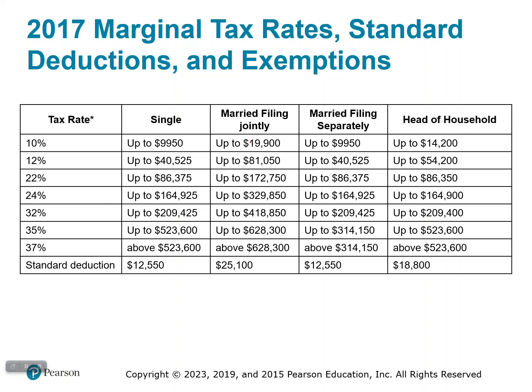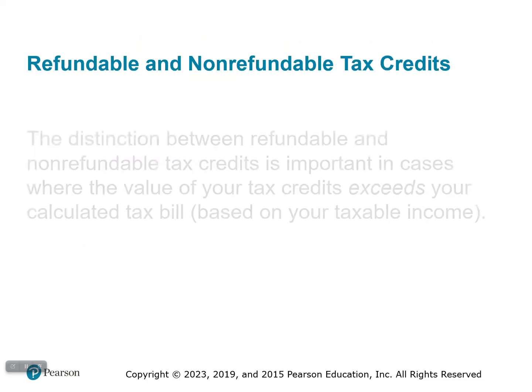In 2017 you can see the standard deductions — notice that married filing jointly is double the single value. If you're single and get married, it's the same value for each of you. For 2021, the rate is 10% if you make up to $9,950 as a single person, and 12% if you make up to $40,525. Most of us are probably in one of the first three tax brackets — higher brackets are where college graduates head and where family wealth sits.